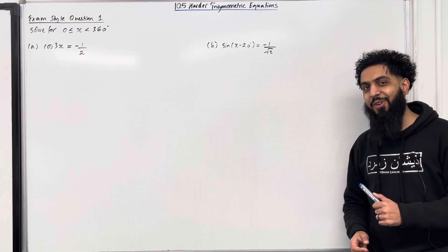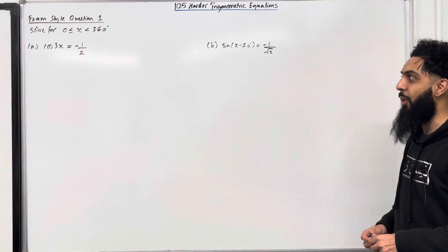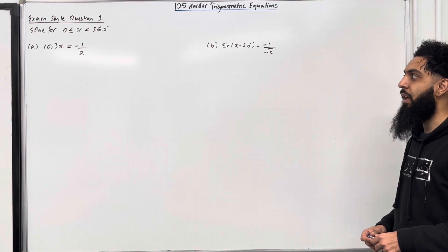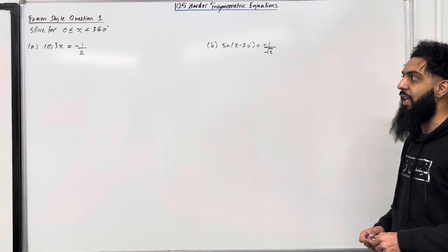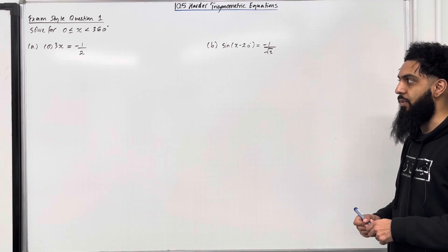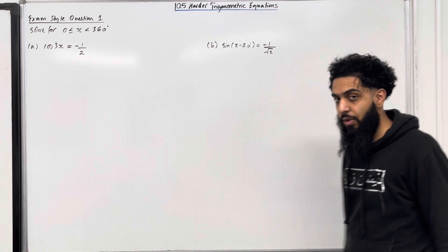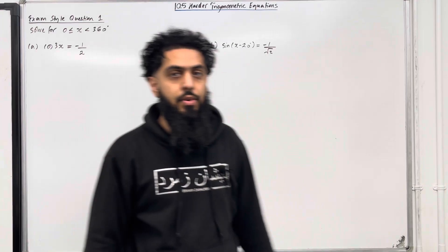Let's have a look at exam style question 1. Solve for x, where x is more than or equal to 0 but less than 360 degrees. Part A: cos 3x equals minus 1 over 2. Let's have a look at the solution to part A.